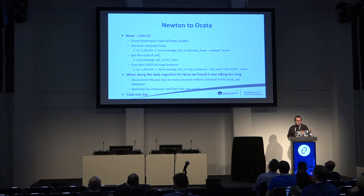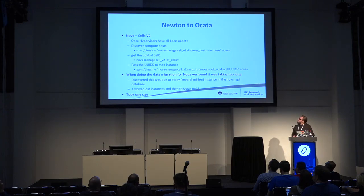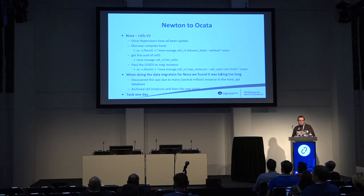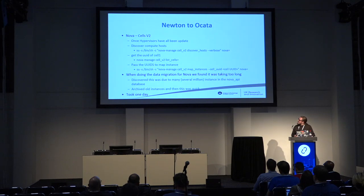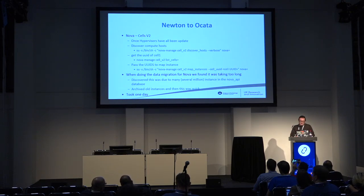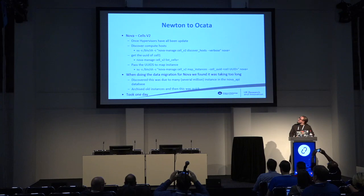Then on to Newton to Ocata. This was the most time-consuming upgrade for us. Technically there weren't any major problems, but when we came to adding the cells and doing the online data migration, it took a lot longer than we were expecting. After doing a bit of digging, we discovered that was because we hadn't archived all of our old instances before the upgrade. Once we did that, what had taken several hours and hadn't completed then happened in about 20 minutes. Because of the delays, that took all of the second day of the upgrades.